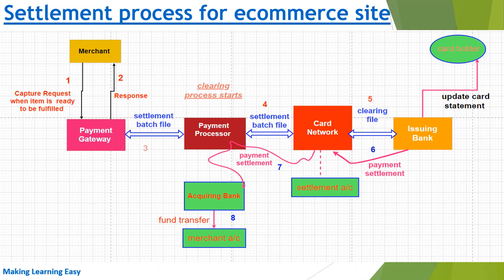Now let's see how the settlement process works for the e-commerce website. I have drawn a diagram showing the settlement process for an e-commerce site. As already discussed, settlement triggers after authorization is completed, which happens when the customer places the order. In the yellow box you can see the merchant, representing the merchant application. Step one is the capture request — settlement is also known as capture. The capture request is sent when the item is ready to be fulfilled, and the merchant application triggers the settlement or capture process, sending details to the payment gateway.